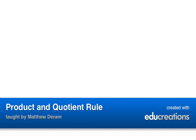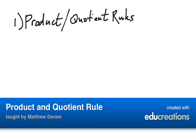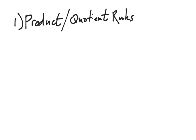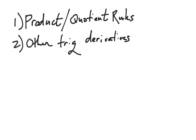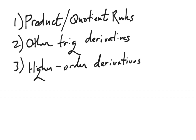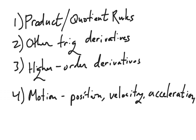This video will talk about four main things: the product and quotient rules, other trigonometry derivatives, higher order derivatives, and particle motion, which will cover position, velocity, and acceleration.